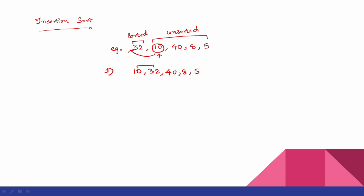Now, the sorted part is 10 and 32; the unsorted part is the remaining elements. In the next iteration, we are going to take 40. We compare 40 with the sorted part - 40 is greater than 32, so we place 40 after 32. We now have 32, 40, and 8 and 5 remaining.